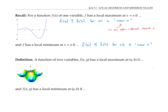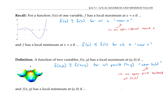The definitions for functions of two variables are entirely analogous. We say that f of x, y has a local maximum at (a, b) if f of a, b is greater than or equal to f of x, y for all points x, y near (a, b), where near (a, b) means in an open disk centered at (a, b). We say that f of x, y has a local minimum at (a, b) if f of a, b is less than or equal to f of x, y for all points x, y near (a, b).